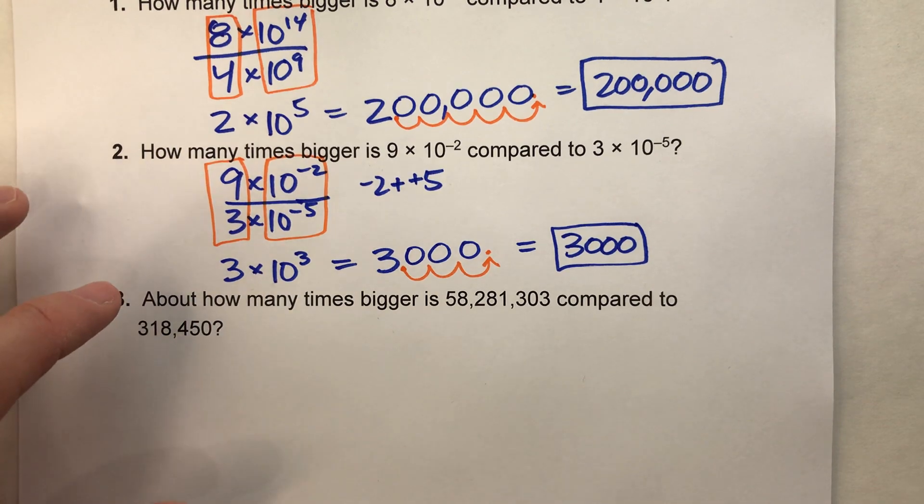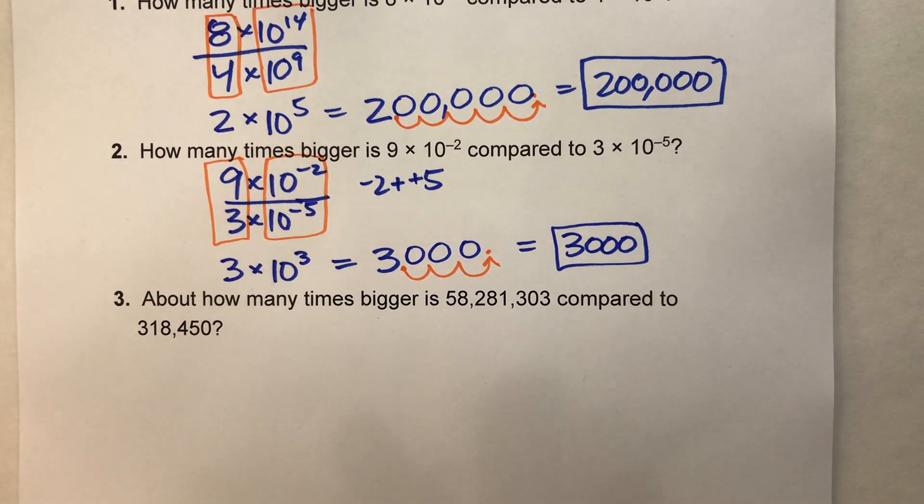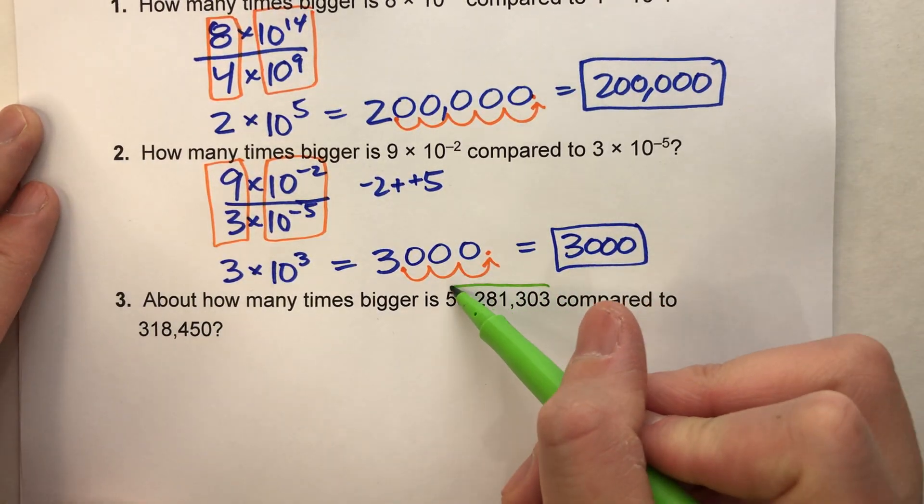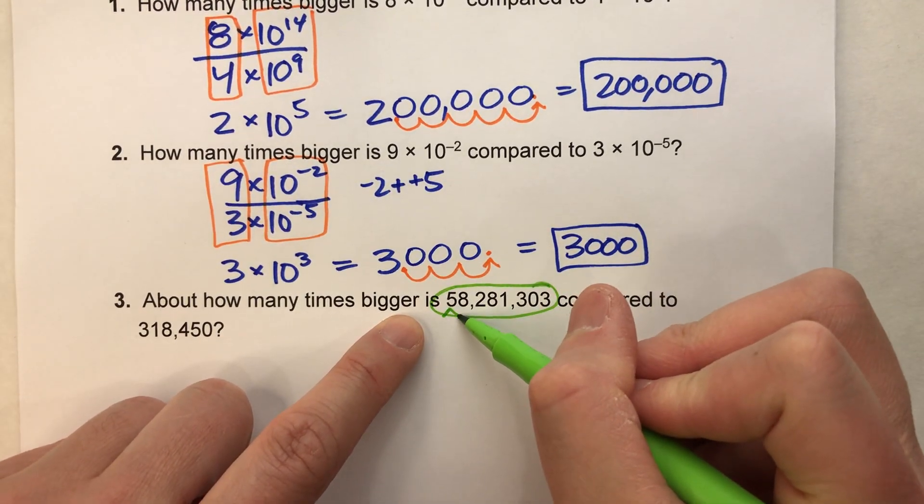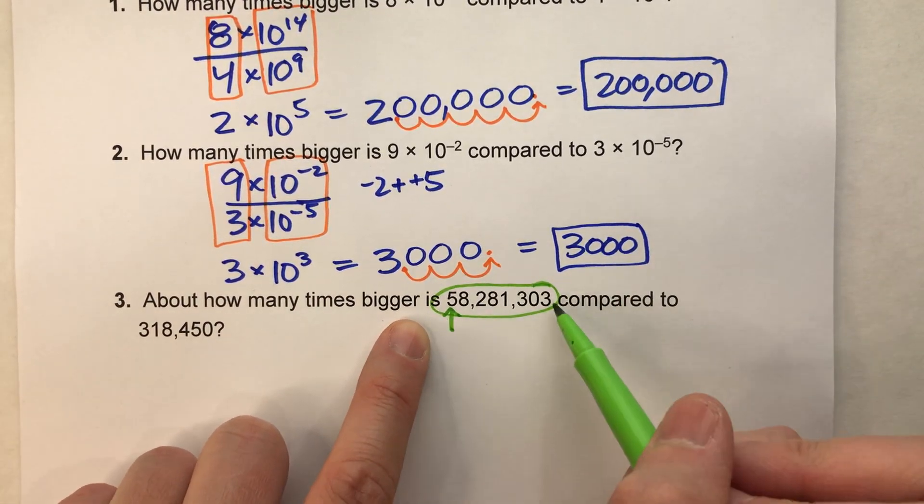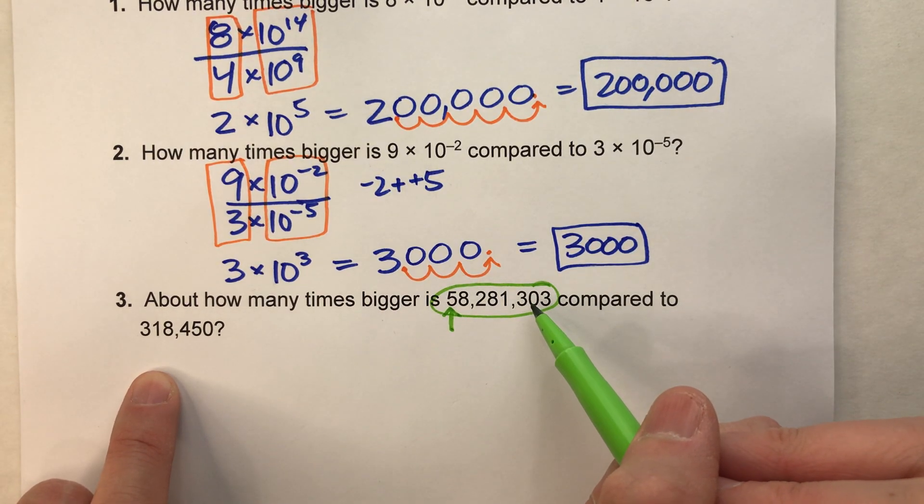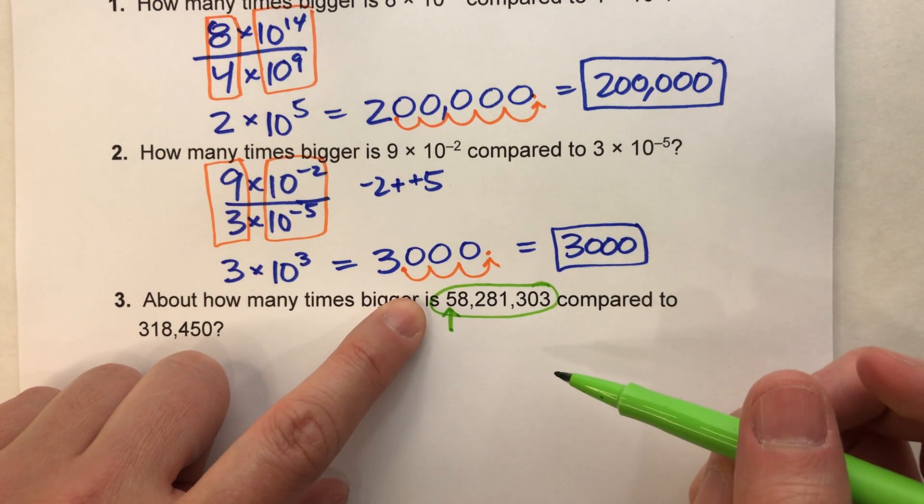In other words, let's estimate these, approximate them, if you will. So 58 million, if I'm going to round this, and I do have a video on approximating numbers to a single digit times the power of 10, I'll put the link down below.